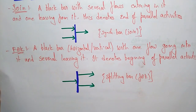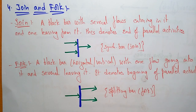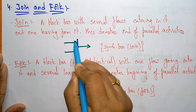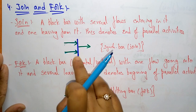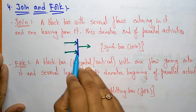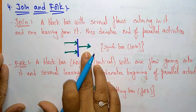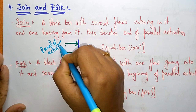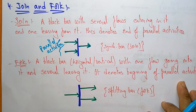Now coming to the next notation: join and fork. A join is represented as a black bar — which may be horizontal or vertical — with several flows entering it and one leaving out. Whenever one flow is leaving out, it denotes the end of parallel activities. So many parallel activities are coming in, and the end of those parallel activities joining into one output is called a join.